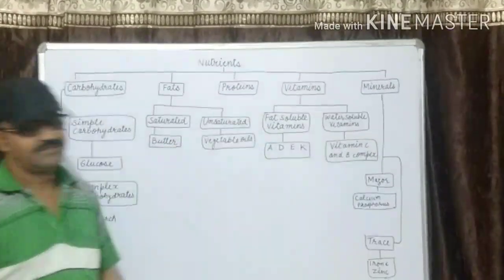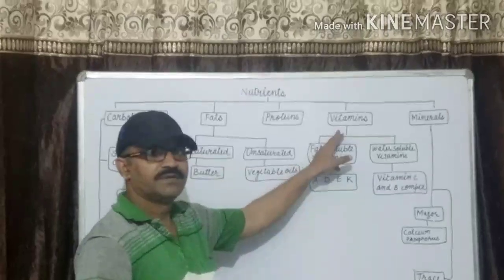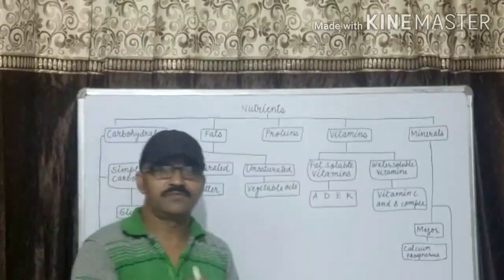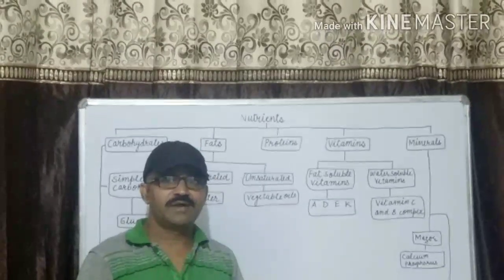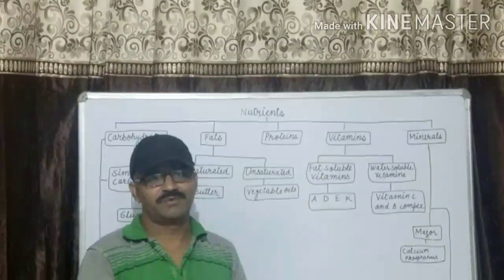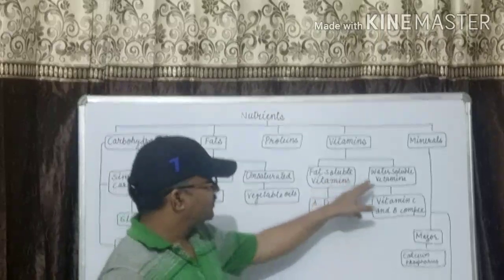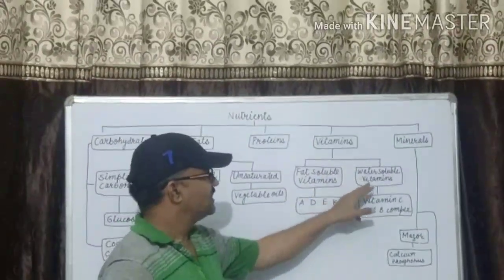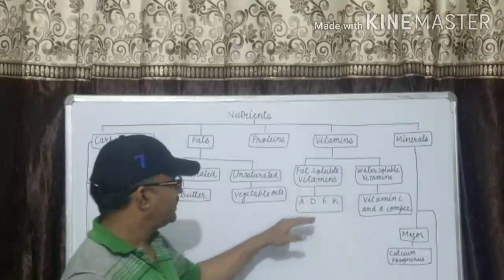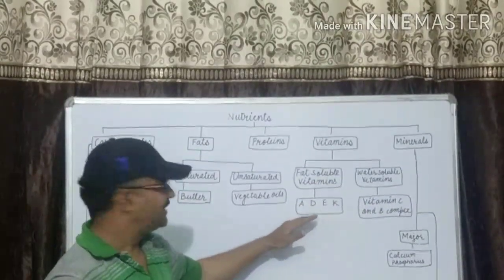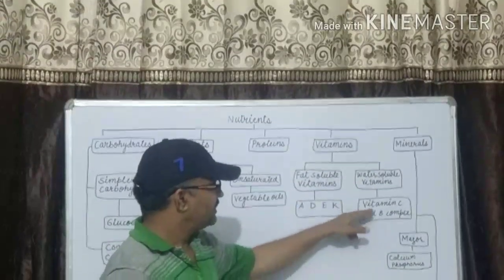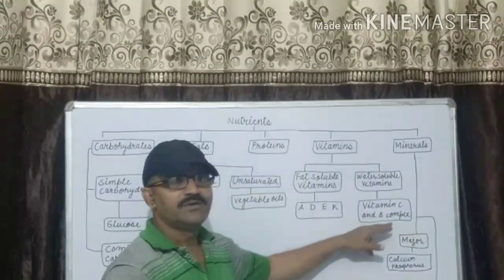Vitamins. Vitamins are needed for normal functioning. Vitamins are required only in small amounts. There are two types of vitamins: one is fat-soluble vitamins and second is water-soluble vitamins. Fat-soluble vitamins: vitamin A, D, E, K. Water-soluble vitamins: vitamin C and vitamin B complex.